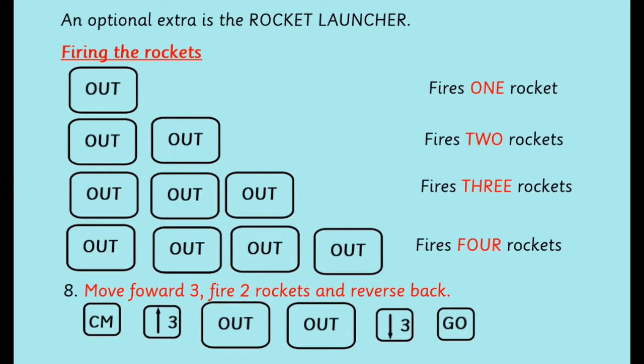An optional extra is the rocket launcher, which you can see on the original picture. Now to fire the rockets we press the button OUT once for one rocket, twice for two rockets, and so on, four for four rockets. So this example, number eight, is move forward three, fire two rockets, and reverse back. So CM again, forward three, OUT OUT, back three, go.